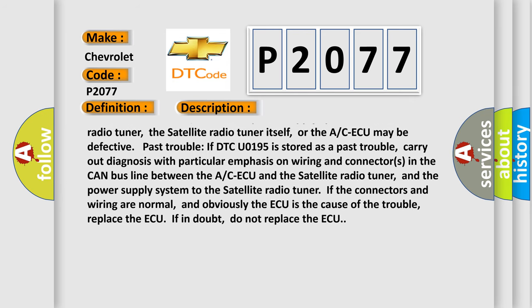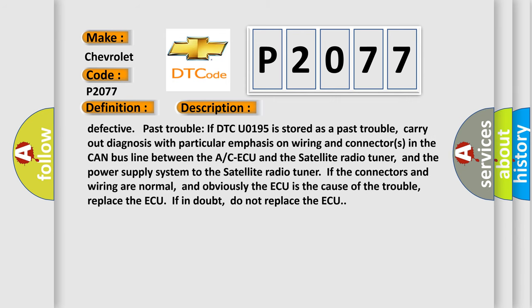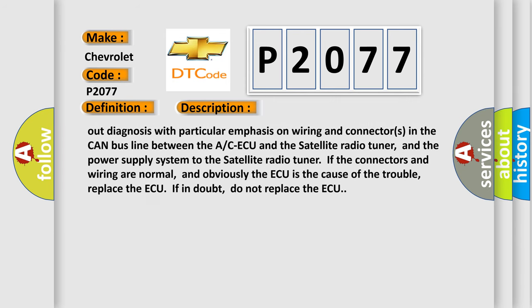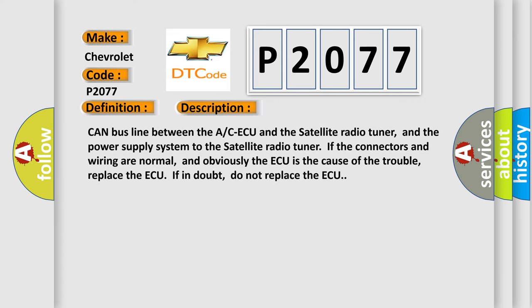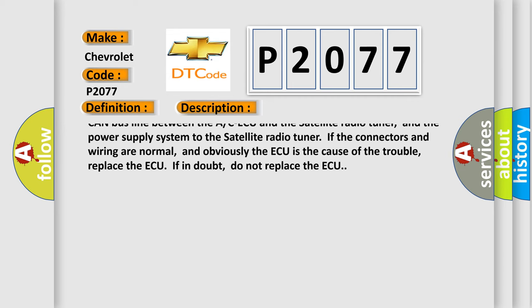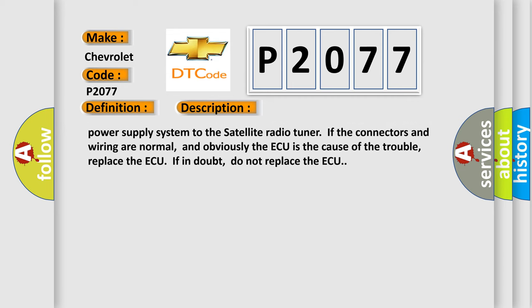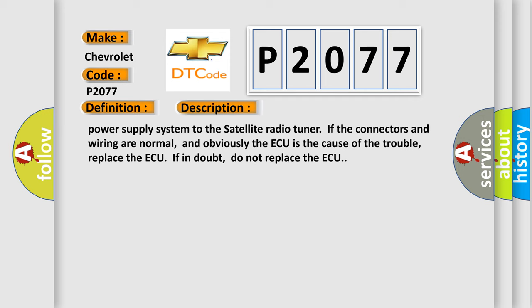The satellite radio tuner itself or the ACAQ may be defective. If DTC U0195 is stored as a past trouble, carry out diagnosis with particular emphasis on wiring and connectors in the CAN bus line between the ACAQ and the satellite radio tuner, and the power supply system to the satellite radio tuner. If the connectors and wiring are normal and the ACAQ is the cause of the trouble, replace the ACAQ. If in doubt, do not replace the ACAQ.